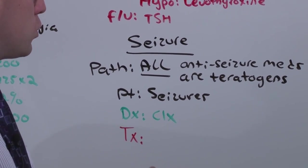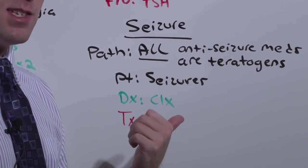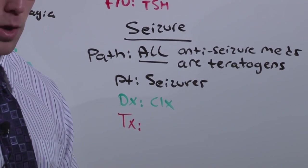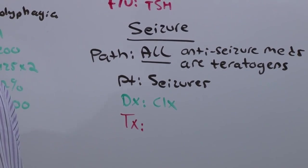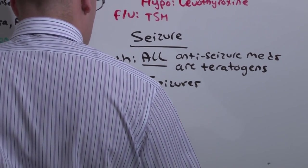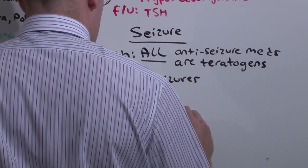But at the same time, if you don't treat mom's seizures and she seizes, she could lose the baby that way as well. So these patients maybe want to be counseled against getting pregnant. But if they do get pregnant and they do seize, use phenobarbital.